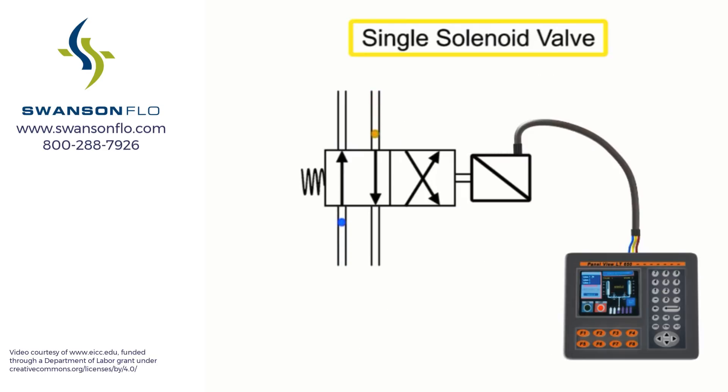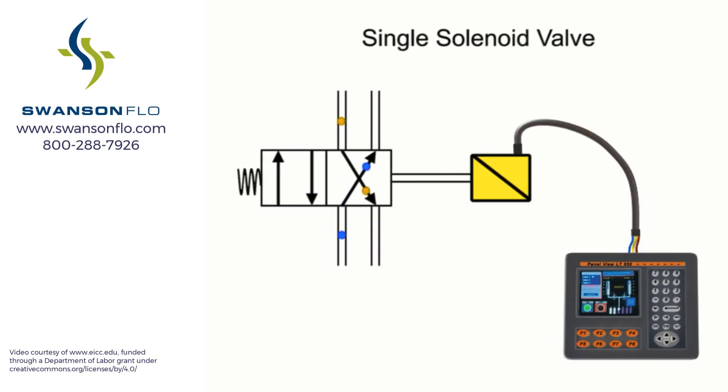A single solenoid valve has one solenoid to assist in valve operation. The valve spool shifts when the solenoid receives an electrical signal and is energized. The valve will remain shifted as long as electrical current is applied to the solenoid.